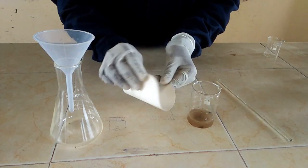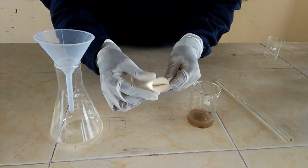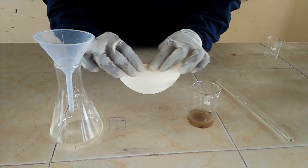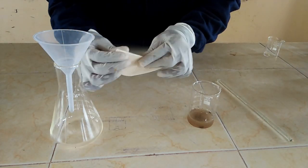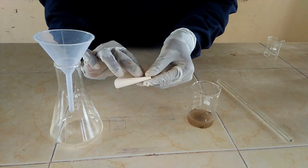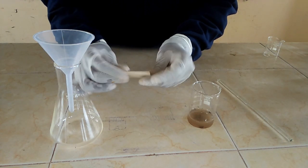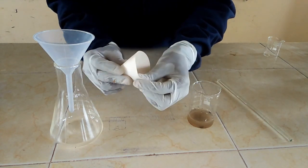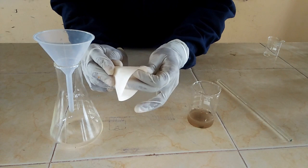So what am I going to do first? First of all, I am going to make a cone using the filter paper. You fold your filter paper into a cone.